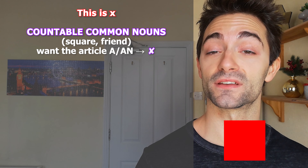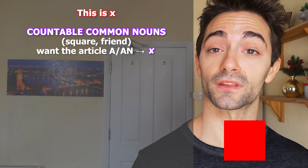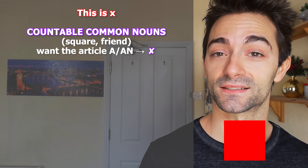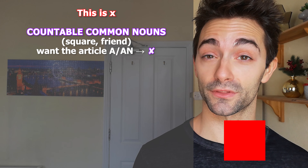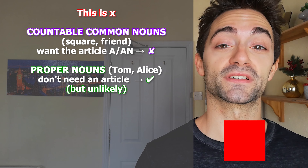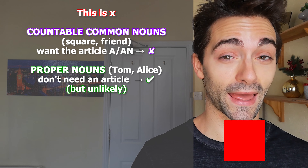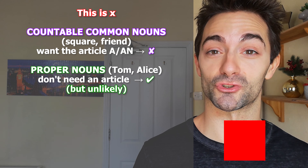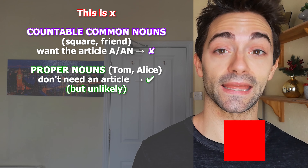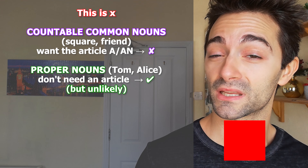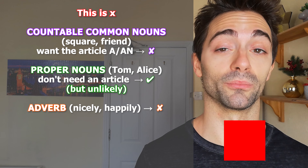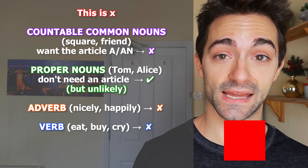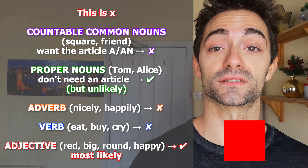If x were a common noun such as friend, dog, shape, or square, in English it would require the article 'a' or 'an,' and because it's not there this can't be what I'm saying, so this is something that we can already rule out. Proper nouns like Tom or Alice, on the other hand, don't require an article, so this could technically be an option. Now this is mathematically possible, however it's not very probable because it's fairly unlikely that I would give a name to a red square, but technically it is an option that we have.